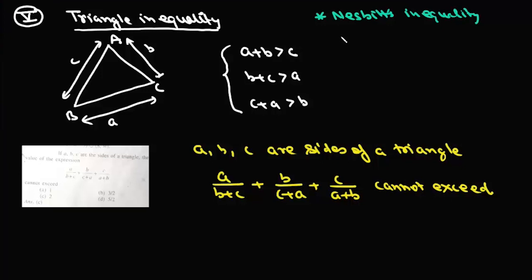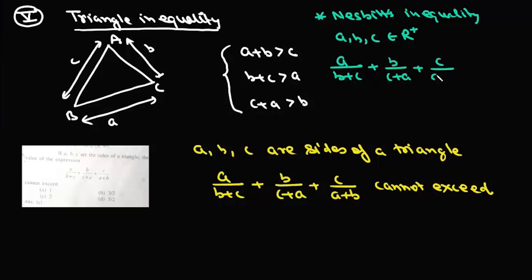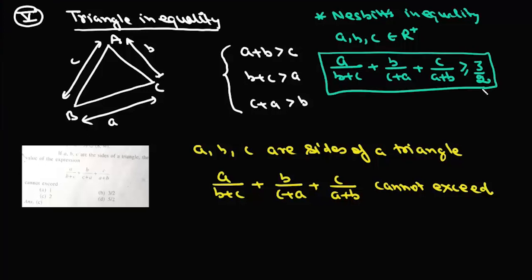Nesbitt's inequality states that if a, b, and c are positive real numbers, then a/(b+c) + b/(c+a) + c/(a+b) is always greater than or equal to 3/2. We have already proved this inequality using 12 methods, so for any positive real numbers this sum will always be greater than or equal to 3/2.